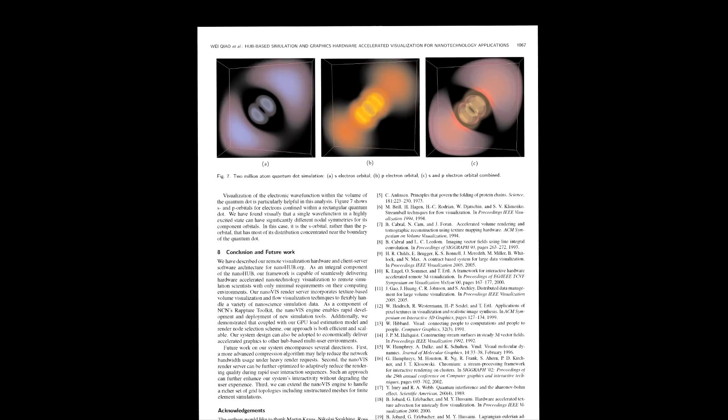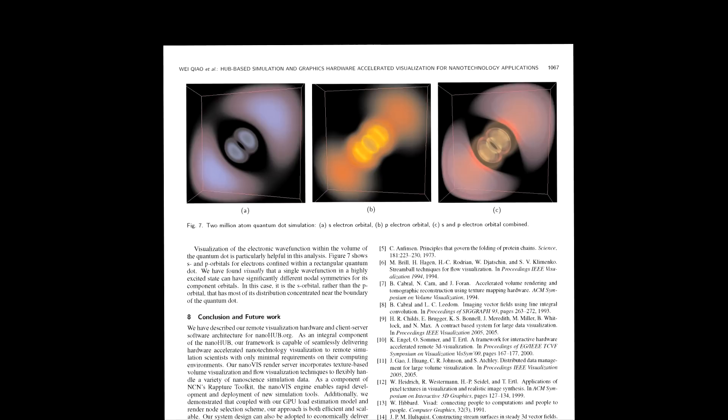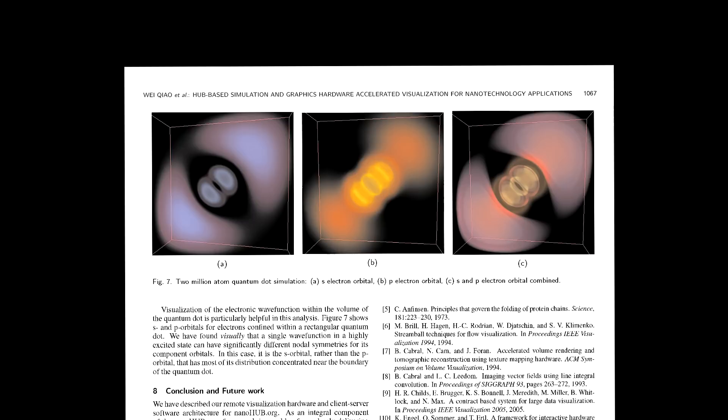Those are the insertions into a document — figures and tables. Besides those, you also have equations, which are basically part of the text, and bullets and similar elements, which are also part of the text. Now that we know our terms, we can look at how to use them.